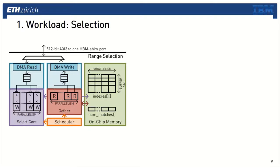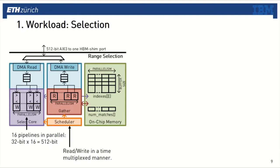Now let's start with the first workload: selection. Here I'm showing one compute engine for performing selection — in total we instantiate 14 of them on the FPGA. This compute engine is relatively simple: it has 16 individual pipelines to process data and therefore can consume 512 bits at the clock rate. The read and write pipelines work in a time-multiplex manner, since they share one AXI3 port. Rather than dividing the port physically between reads and writes, time-multiplexing gives more flexibility in bandwidth allocation — for instance, if we have low selectivity and write much less data than we read, most of the bandwidth can be allocated to reads.